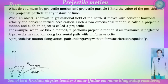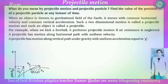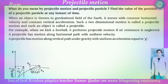What do we mean by projectile motion? When an object is thrown in a gravitational field of the earth, it moves with constant horizontal velocity and constant vertical acceleration. Such a two-dimensional motion is called projectile motion, and such an object is called a projectile. For example, when we kick a football, it performs projectile motion if air resistance is neglected.